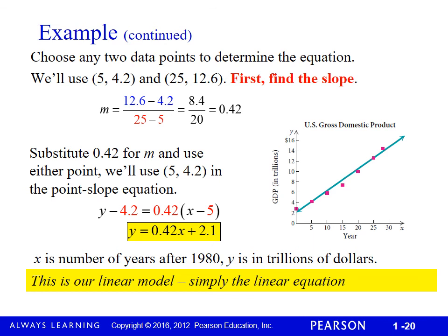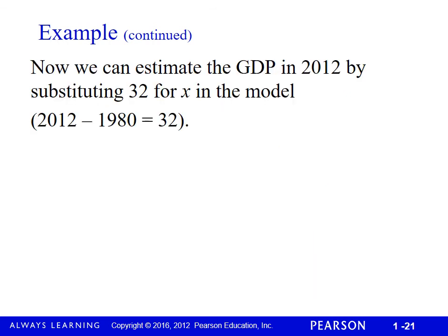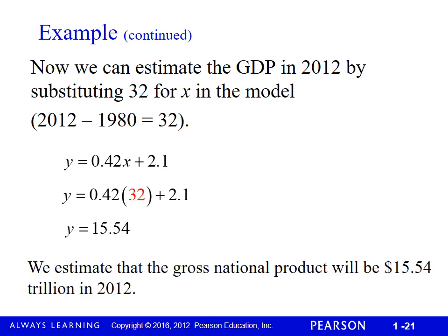If I wanted to figure out the gross domestic product, remember in 2012, I'm going to use the linear equation that we figured out and simply plug in 32. It's 15.54. If you leave that as the answer on the test, you will get it wrong. 15.54 what? 15.54 trillion dollars is our gross national product in 2012.